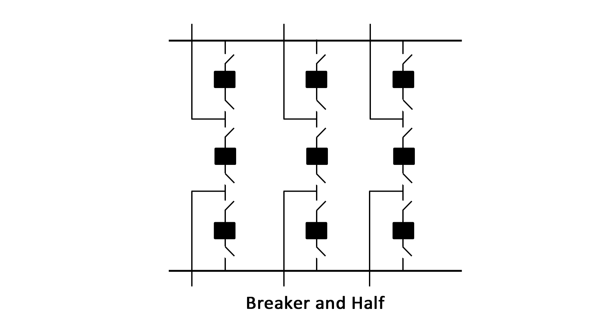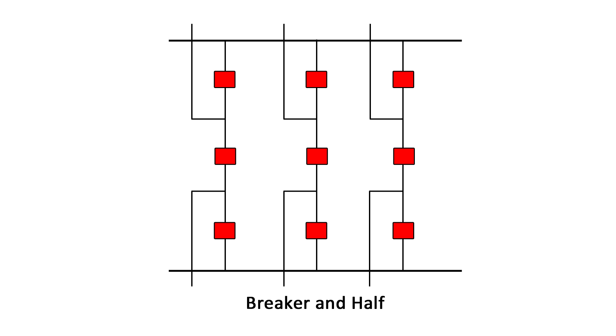With three breakers connected between the buses, three breakers are required for every two circuits, hence the one-and-a-half name.